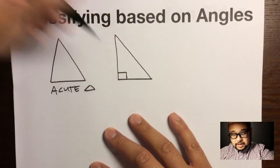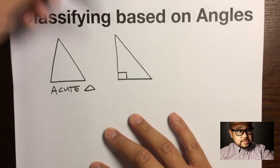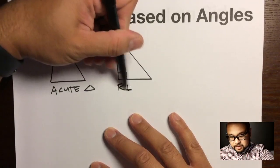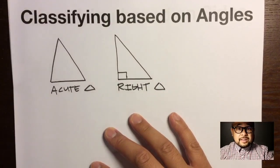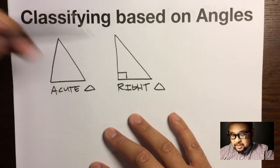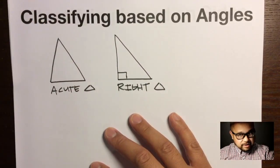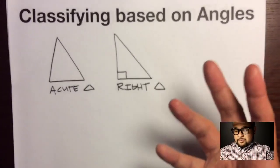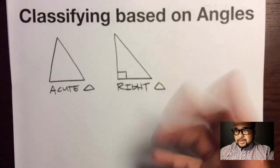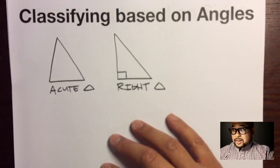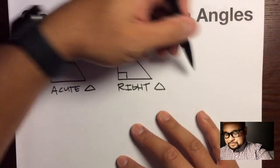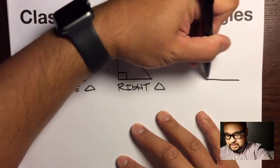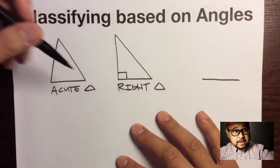Another classification based off angles is if the triangle has exactly one right angle — that's called a right triangle. Fun fact: a triangle can't have more than one right angle, because if it did, all the angles would add up to more than 180 degrees, which would violate the Triangle Sum Theorem.